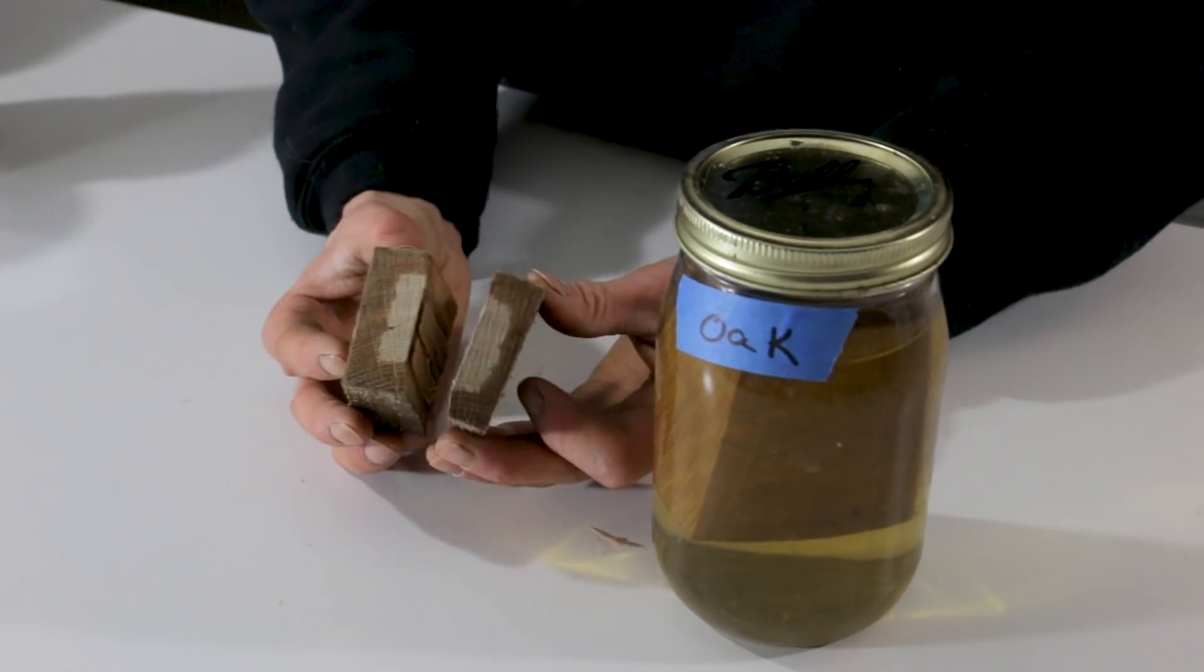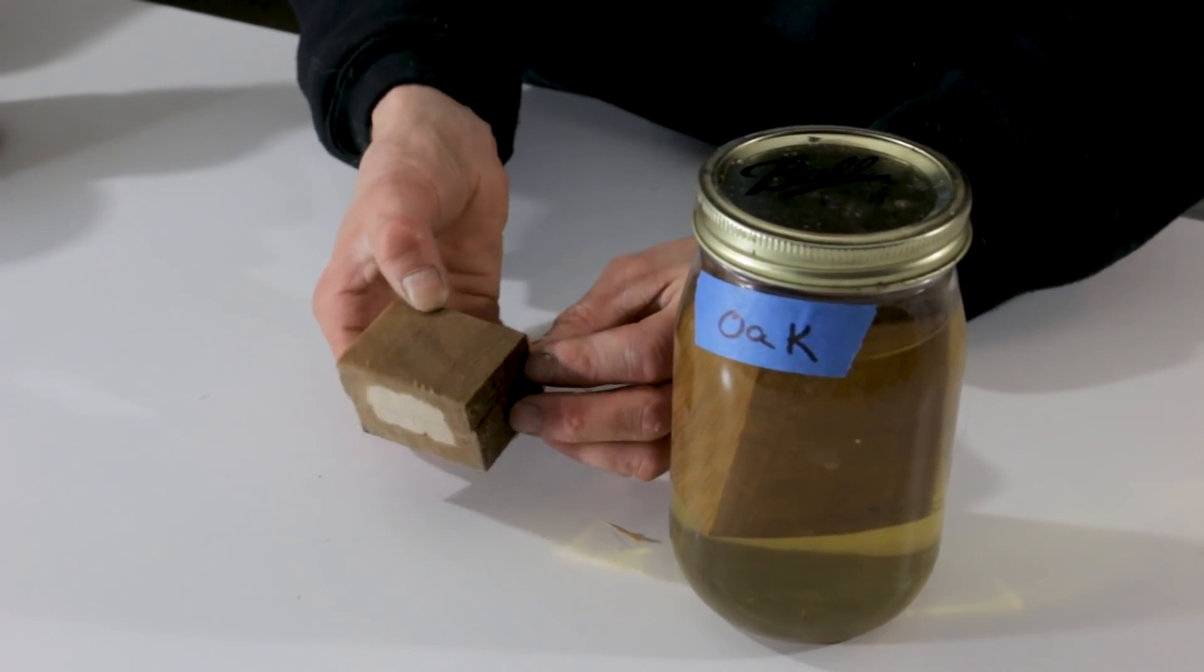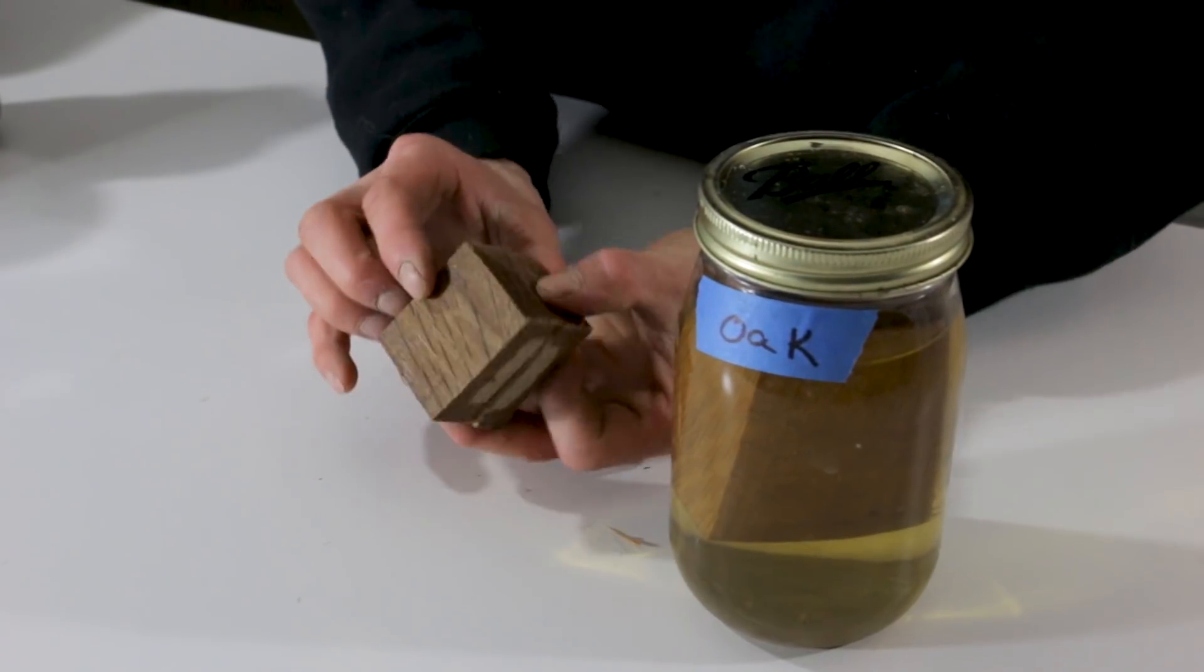You can see that other than making it wet, the saltwater has not had any adverse effect on the oak. It's just darker where it's wet.